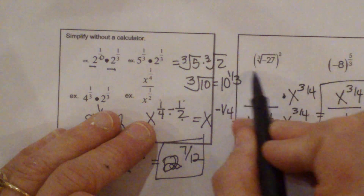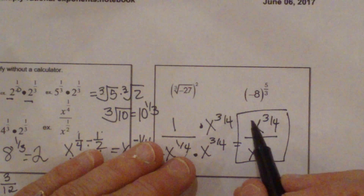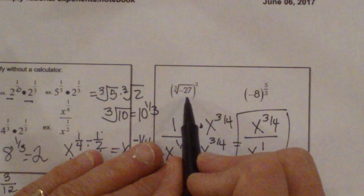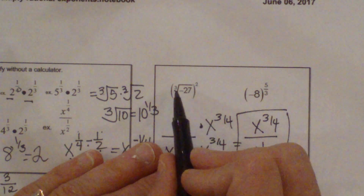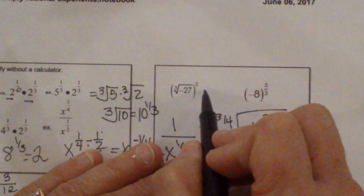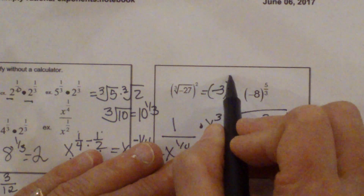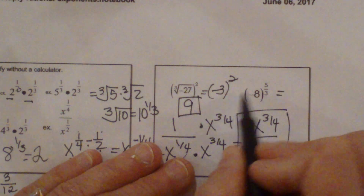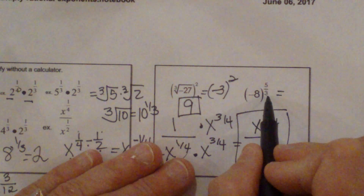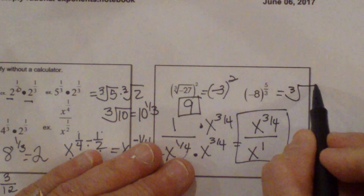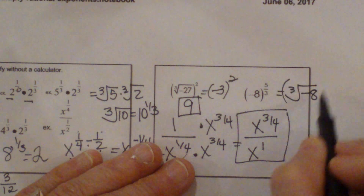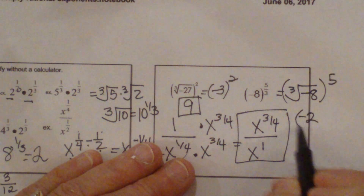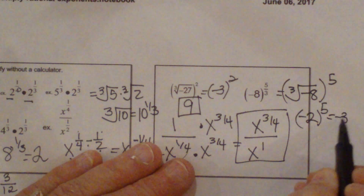Now let's look at simplifying some of the radicals without a calculator. I'm taking the cube root of negative 27 and then squaring that. The cube root of negative 27 is going to give me negative 3. But then negative 3 squared is going to give me 9. Here's another one similar to that — I'm going to rewrite as the cube root of negative 8 quantity to the 5th. The cube root of negative 8 is negative 2, and negative 2 to the 5th power is negative 32.